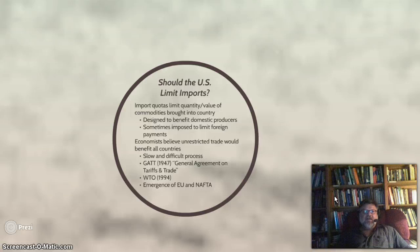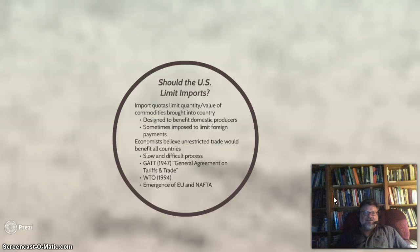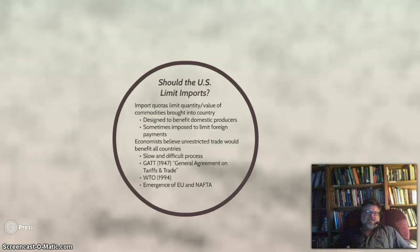Import quotas limit the quantity and value of commodities brought into the country and are designed to benefit domestic producers. Economists believe that unrestricted trade would benefit all countries — this is called neoliberalism. The original liberalism was the laissez-faire free trade of Adam Smith in 1776, from the Scottish Enlightenment. Neoliberalism, also known as the Washington Consensus, is the belief that if all trade barriers, import taxes, and tariffs were dropped and everything traded freely, it would benefit all countries in the long run, though it is a slow and difficult process.